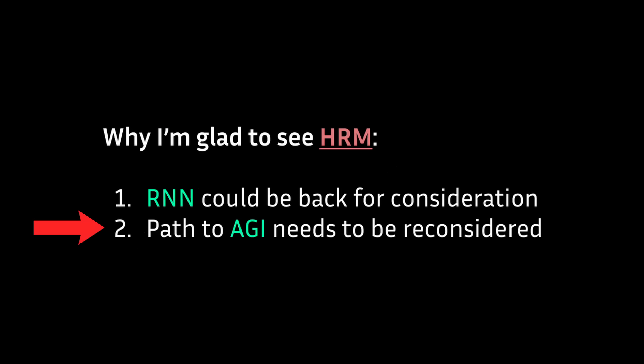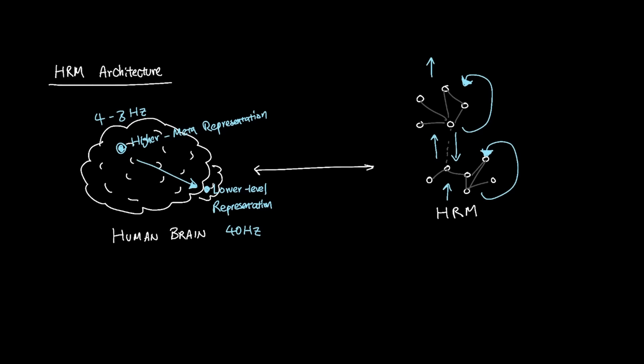The second reason is this: the path to true AGI needs to be reconsidered. It's good to see that HRM was inspired by how human brain actually functions. And as much as transformer-based architecture is extremely effective at what it does, it lacks the ability to truly think and reason, which is a critical feature when we're talking about AGI.